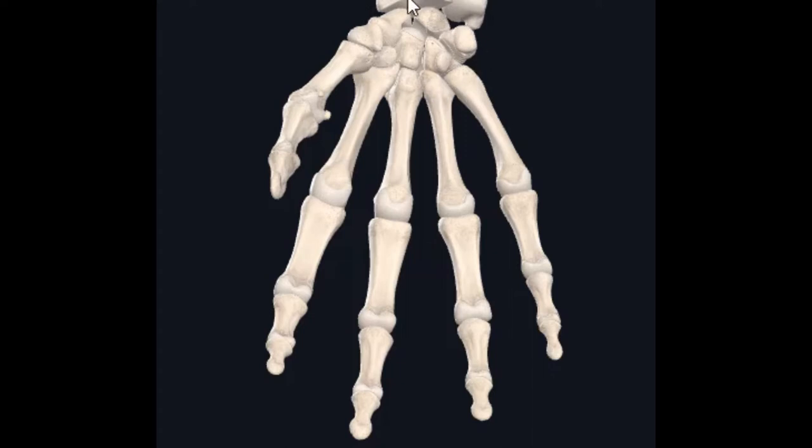We're going to study these bones right here. Remember if you watched the bones of the upper limb video, I labeled these as carpal bones. We have eight carpal bones, and it's imperative that you know all eight. The mnemonic is: Some Lovers Try Positions That They Can't Handle.